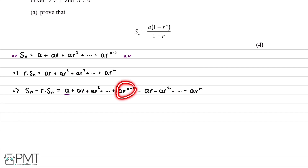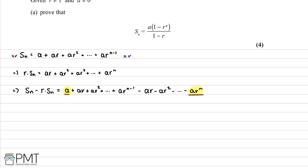Now we look at which terms cancel. We have ar and negative ar, ar squared and negative ar squared, and so on up to ar to the n minus 1 which also cancels. This leaves us with just a and negative ar to the power of n. So we can write: Sn minus r times Sn equals a minus ar to the power of n.